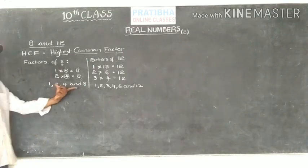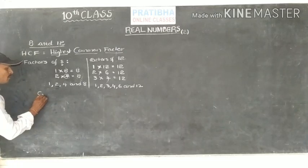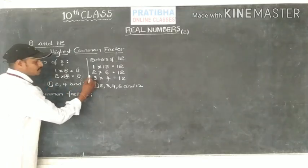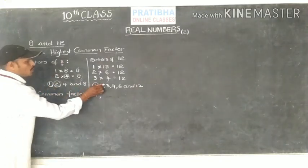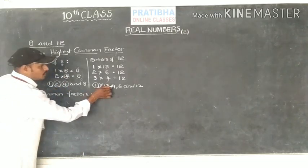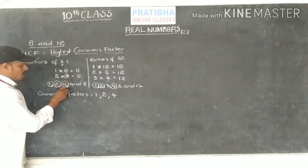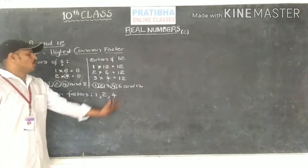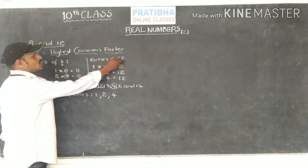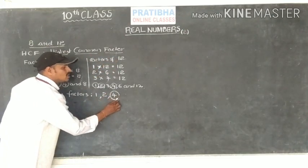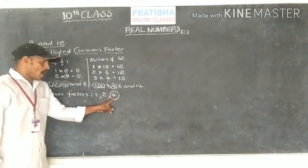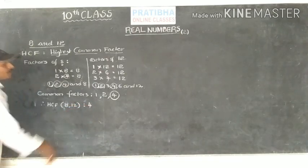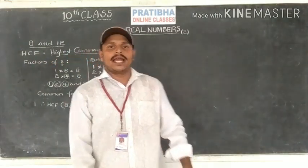Now just identify the common factors of these two numbers. Write the common factors: 1 is common, 2 is a common factor, and 4 is also a common factor. 8 is not common, and 6 and 12 are not common. So the common factors of 8 and 12 are 1, 2, and 4. Among these, 4 is the greatest, so the Highest Common Factor — HCF of 8 and 12 — is 4.